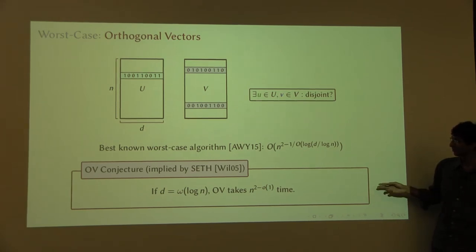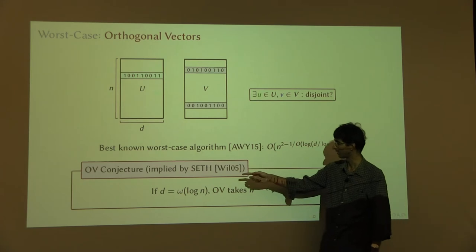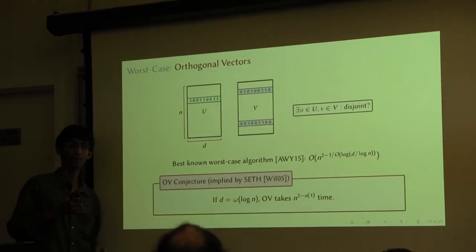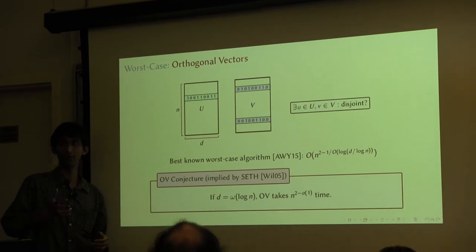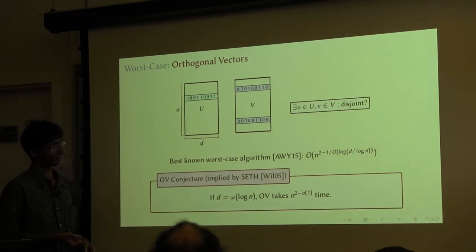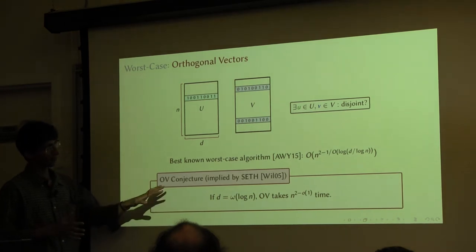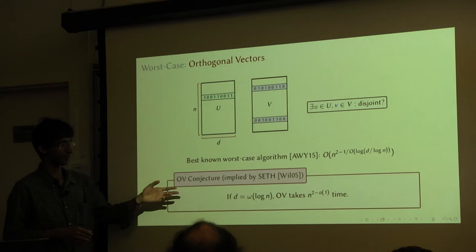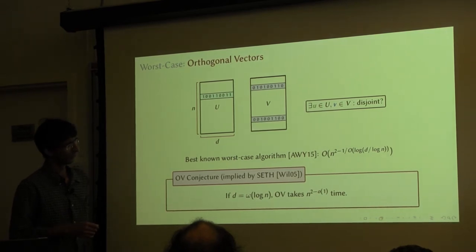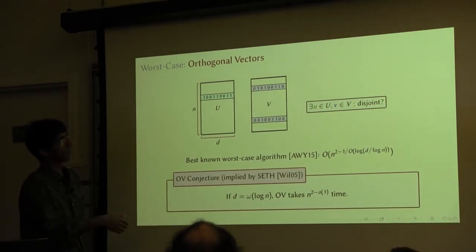This conjecture turns out to be implied by what is called the Strong Exponential Time Hypothesis. The Strong Exponential Time Hypothesis is a conjecture about the complexity of the satisfiability formula on n variables. This conjecture is well-supported, though opinion is slightly divided in the community. Anyway, that's about this problem — the orthogonal vectors problem.